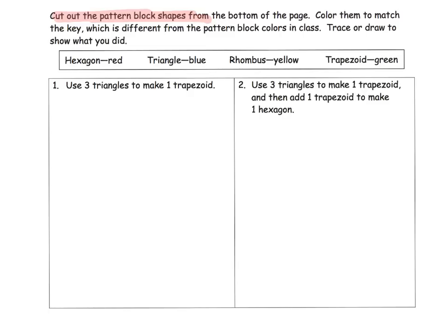And so the idea is color them to match the key. Hexagon is red, triangle is blue, rhombus is yellow, trapezoid is green. So that's a unique coloring, that's not your traditional pattern blocks color code.